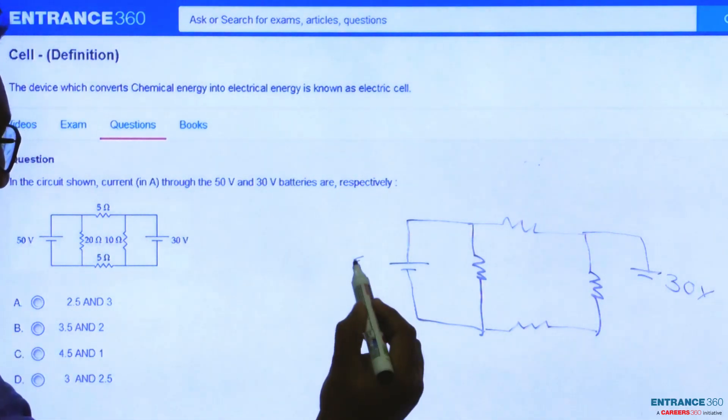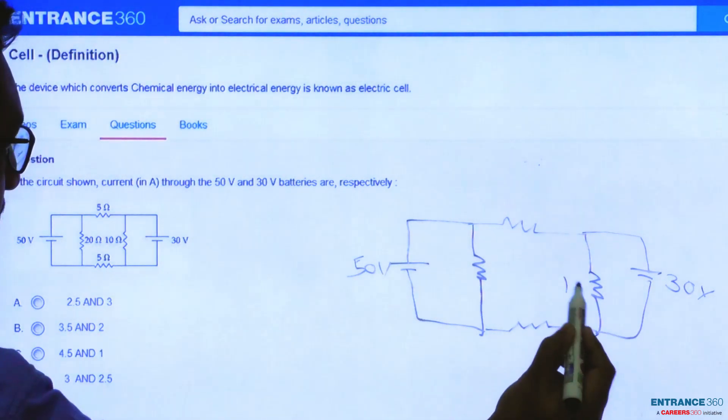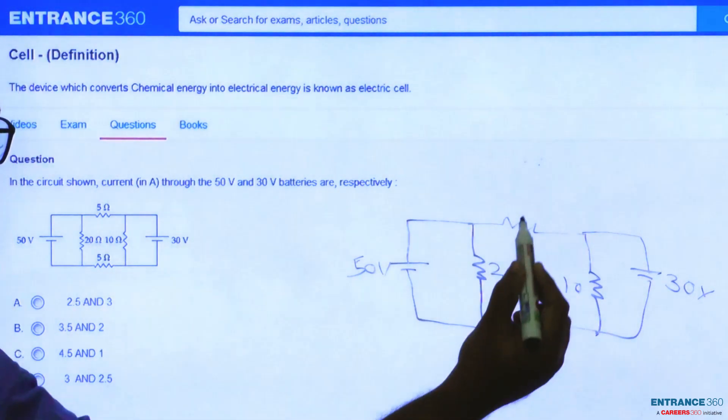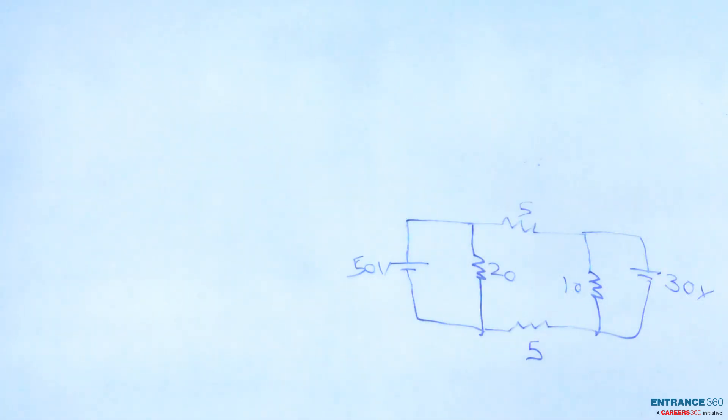So we have 30 volt, 50 volt, 10, 20, 5, and 5 ohms. We have to find current through the 50 volt and 30 volt batteries.